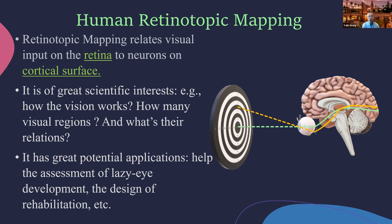For example, some people experience cortical blindness due to a car accident, and some visual regions may be damaged. However, if we know the exact location of the retinotopic matching, it could help us design neural rehabilitation to improve brain and vision recovery.